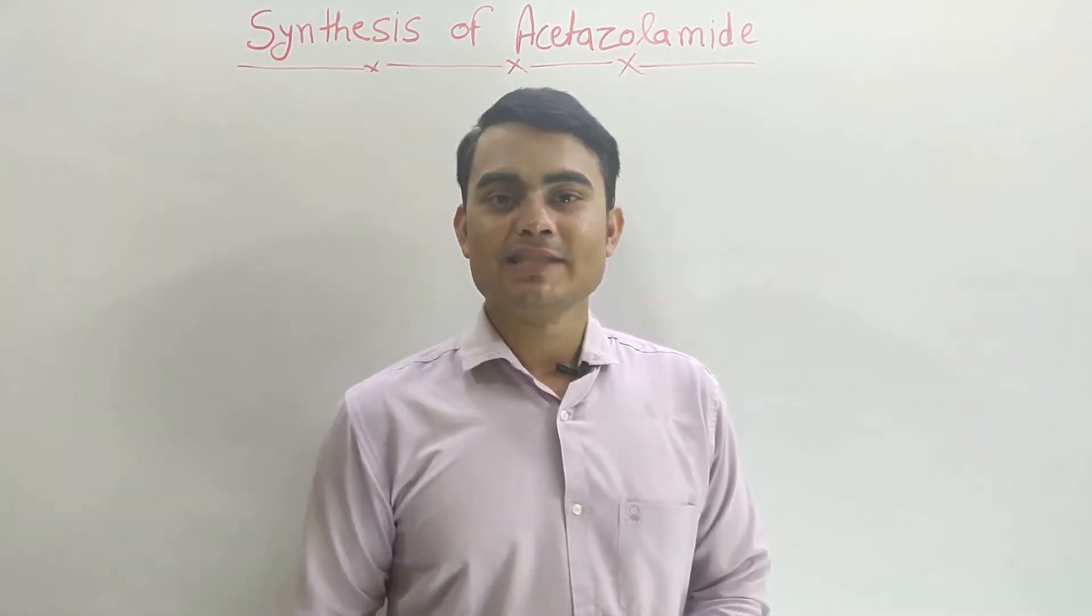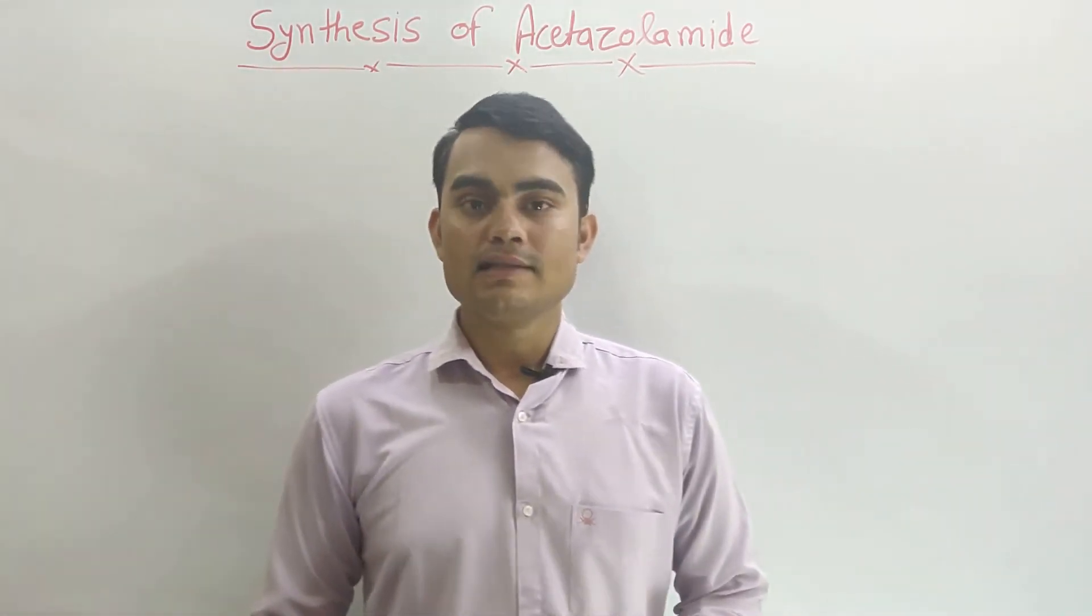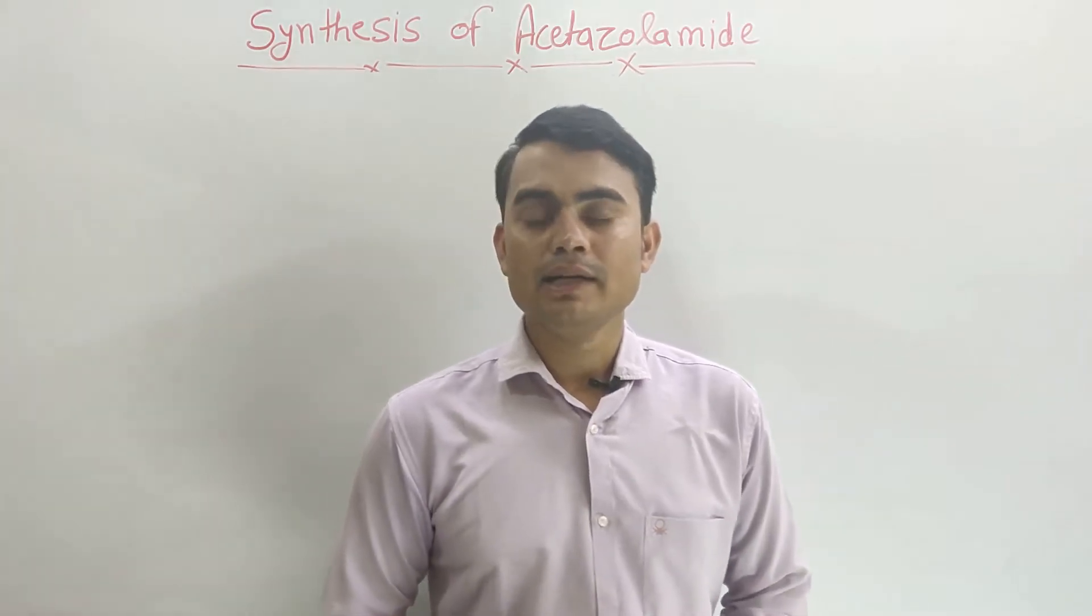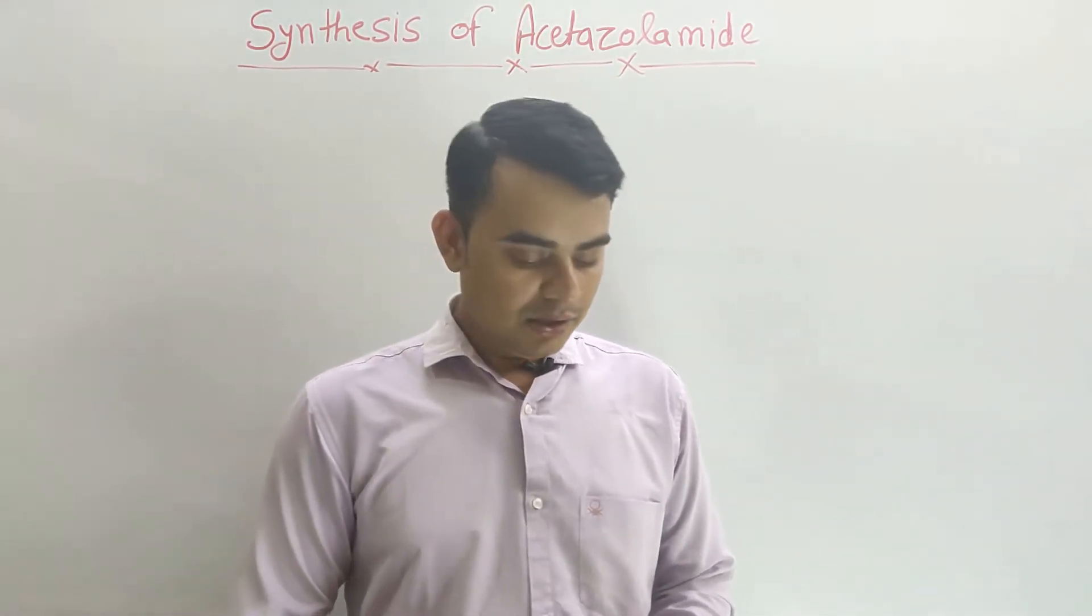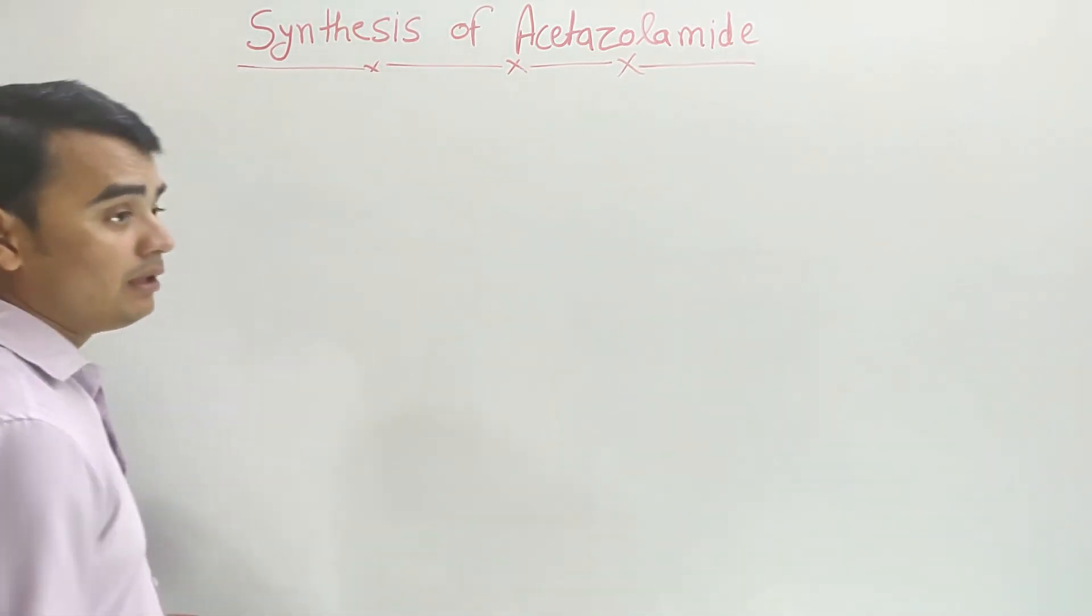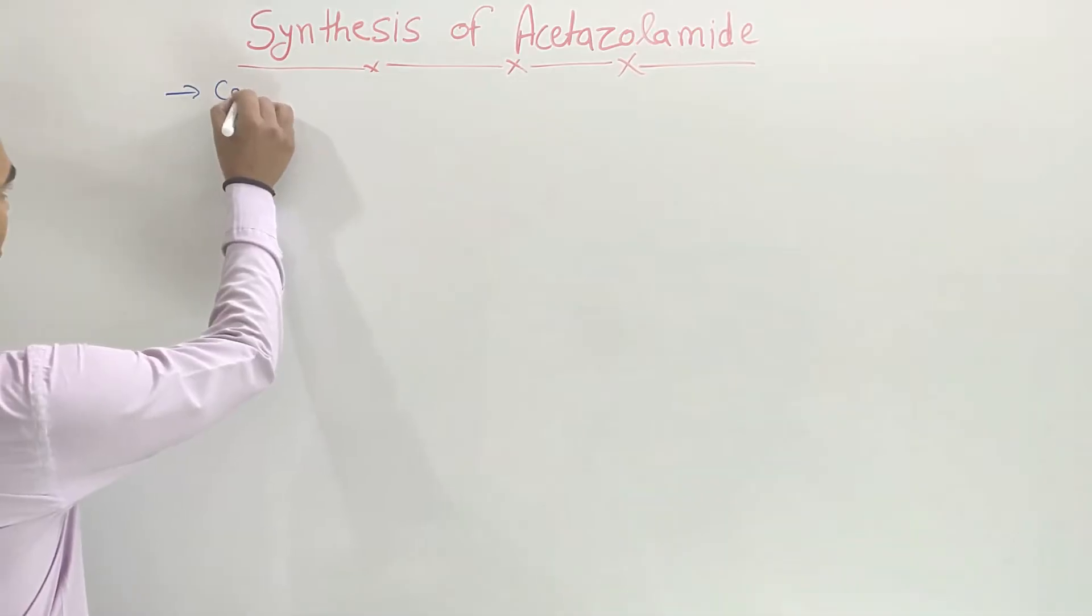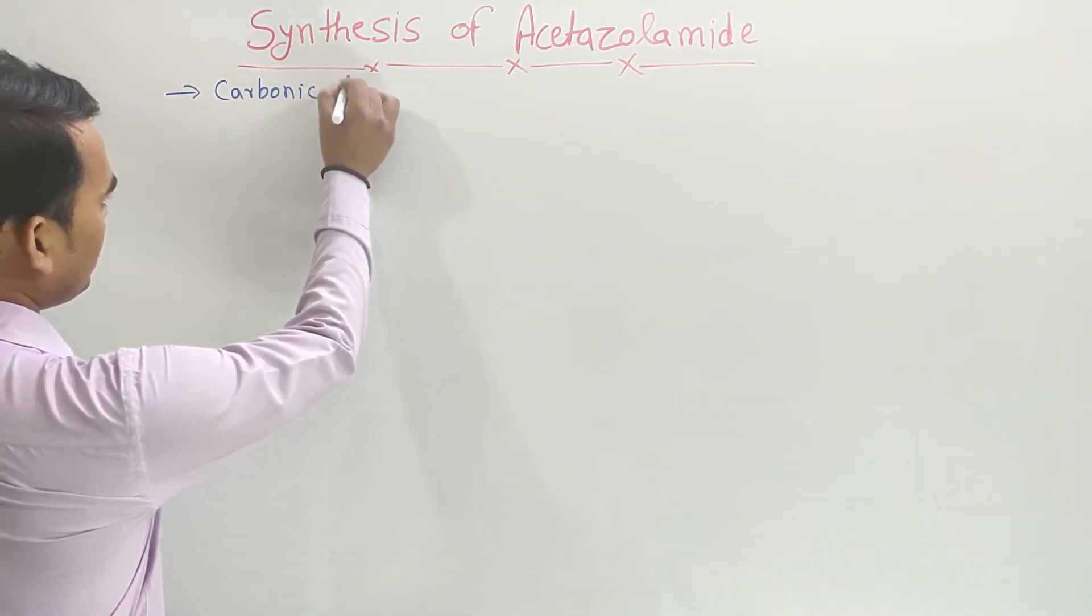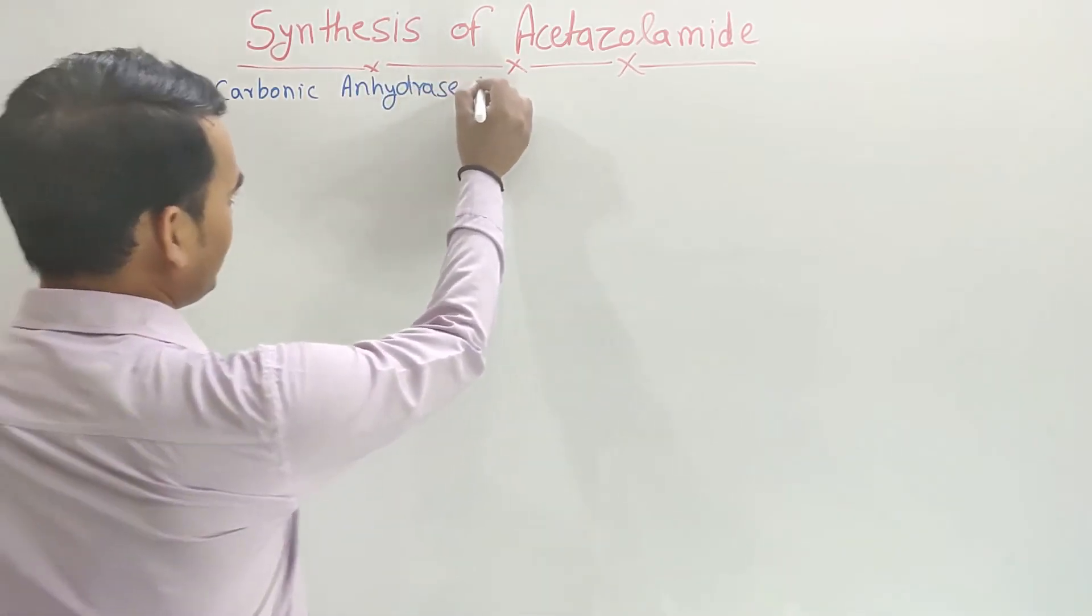Hello friends, welcome back once again. Today we are going to discuss the synthesis of acetazolamide. Acetazolamide is a carbonic anhydrase inhibitor under the diuretic class. So acetazolamide is a carbonic anhydrase inhibitor.